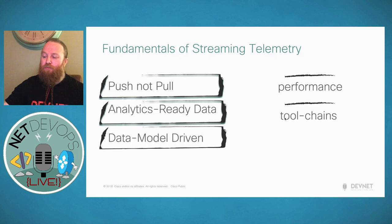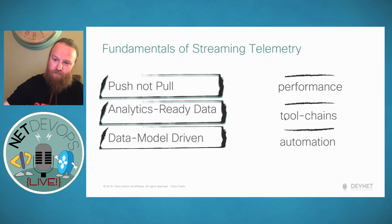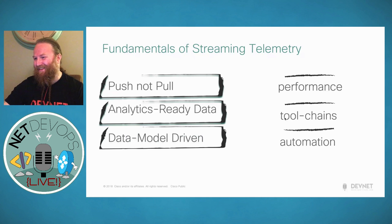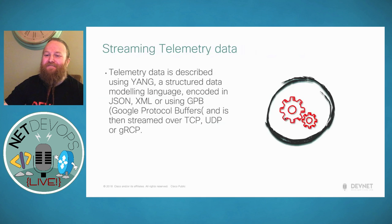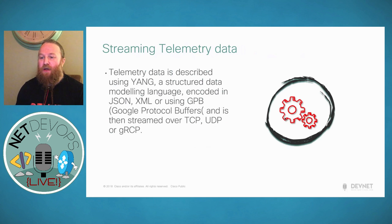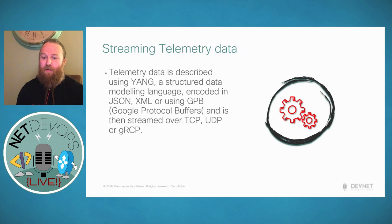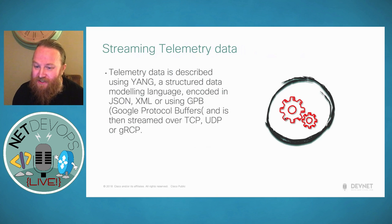This really brings about the model-driven or MDT automation approach. Streaming telemetry data is described using YANG — a structured data modeling language which can be encoded in JSON, XML, or GPB (Google Protocol Buffers). This is then all streamed over TCP, UDP, or gRPC. We're very familiar with TCP and UDP; gRPC is a fairly new one that we'll learn about coming up.